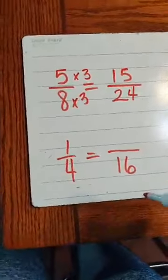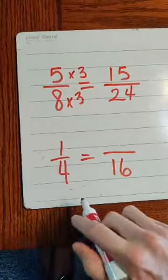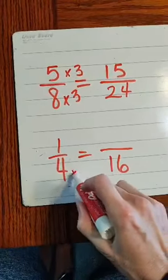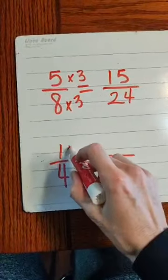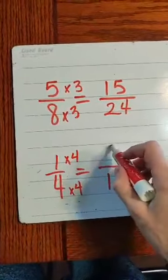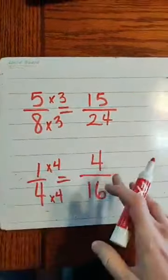So now we can look at this one, 4 times what gets us 16? You got it, 4 times 4, so whatever we do to the bottom, we do to the top. 1 times 4, 4, so those are complete proportions.